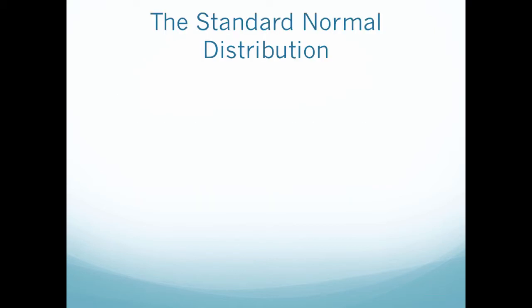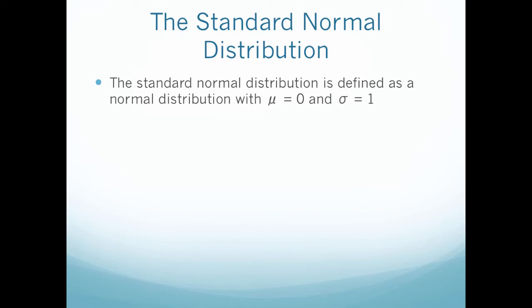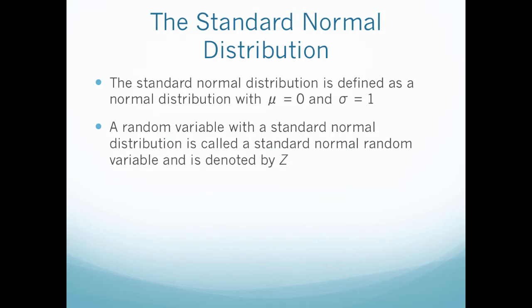So this process of converting a normal distribution to a standard normal distribution is called standardizing or normalizing a value. So we have to always do this step before we can turn to our tables in the back of the book. These tables are in Appendix A in the back of your book. We will go through an example with these in just a second. So what does it mean to standardize a distribution? Basically we're taking our normal distribution, no matter the mean and the standard deviation, and we're transforming it, or we're converting it, to a normal distribution with a mean of 0 and a standard deviation of 1.